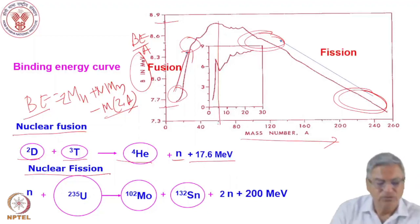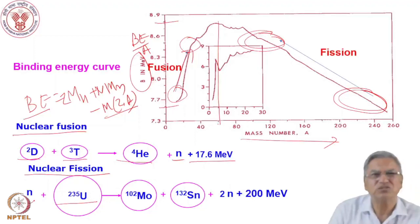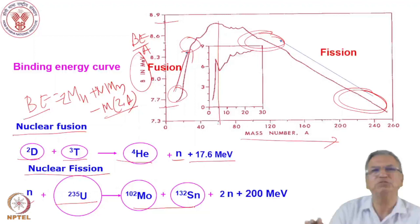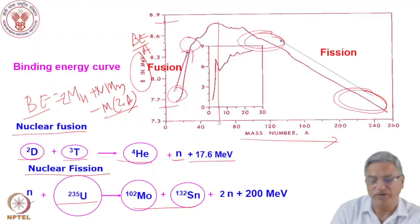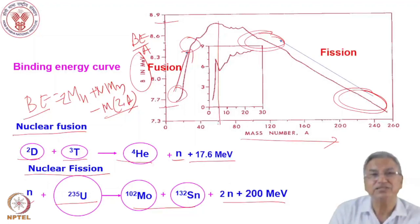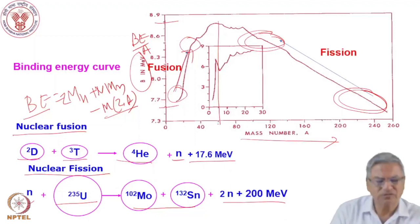In nuclear fission, the heavy nucleus captures a neutron — U-235 captures a neutron to become U-236 — which then splits into two fragments. There are many possible pairs; hundreds of binary fragment pairs are found. In the process, sometimes two, sometimes three neutrons are emitted, and a large amount of energy is released as kinetic energy of fission fragments and other particles. Both these reactions release large amounts of energy, and we will discuss how to compare energy production from these two processes.